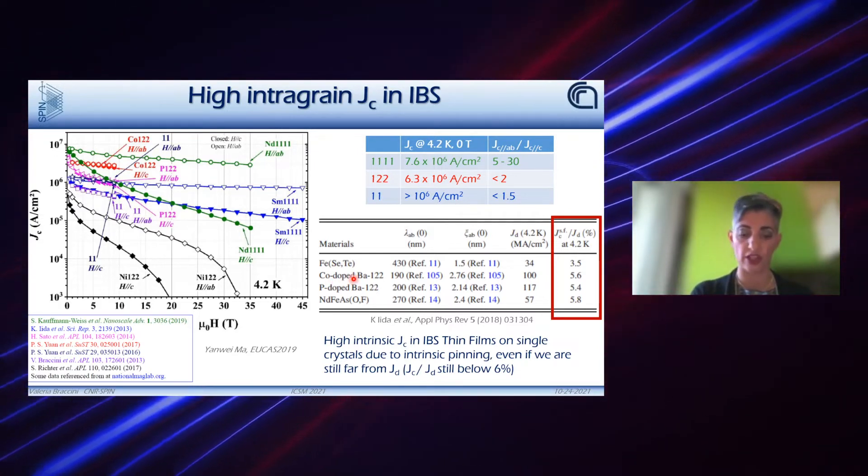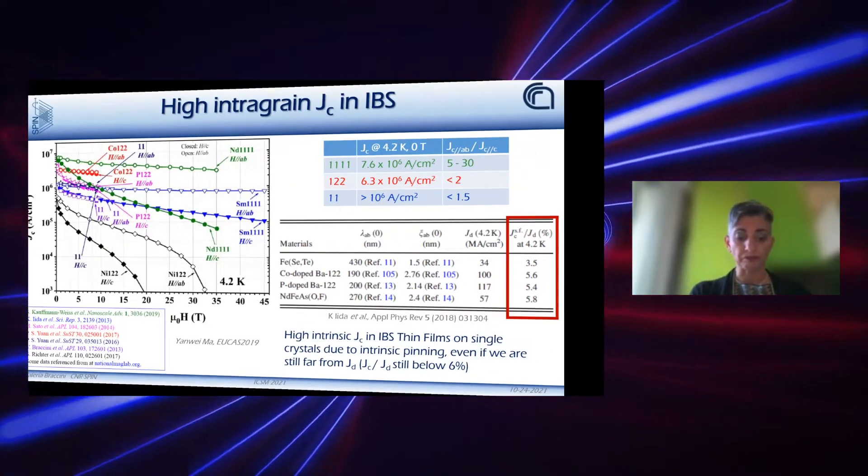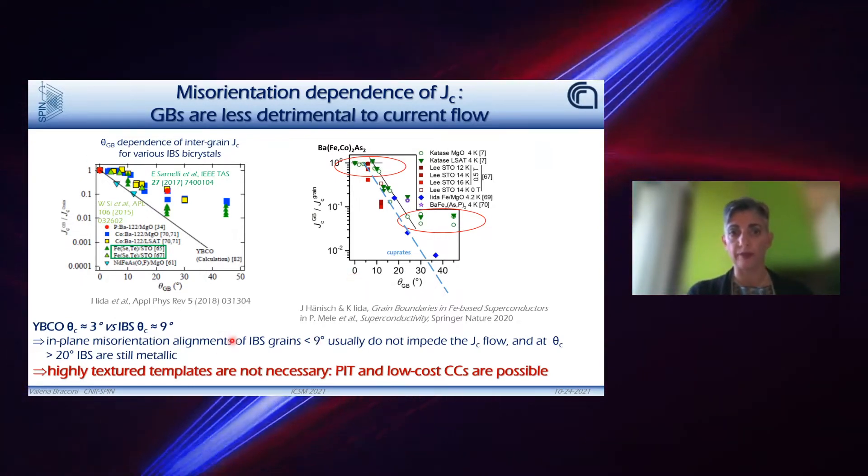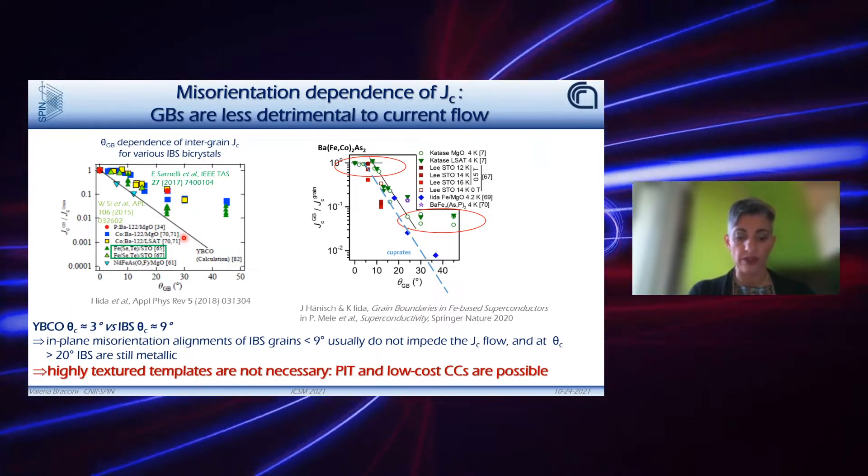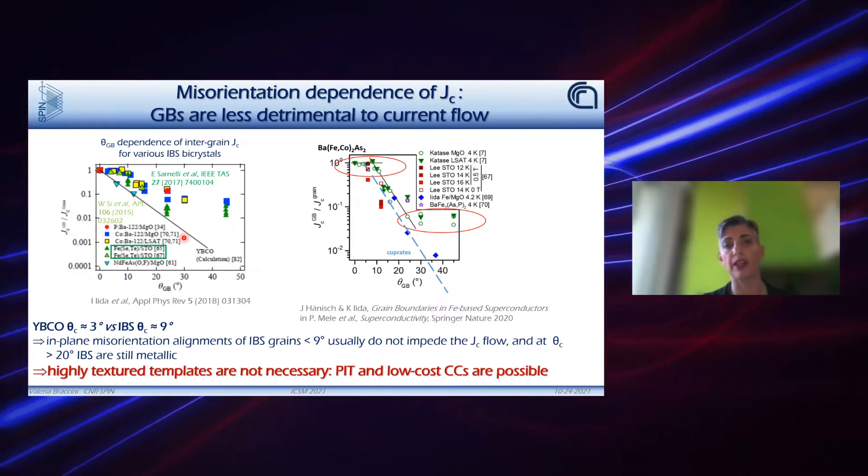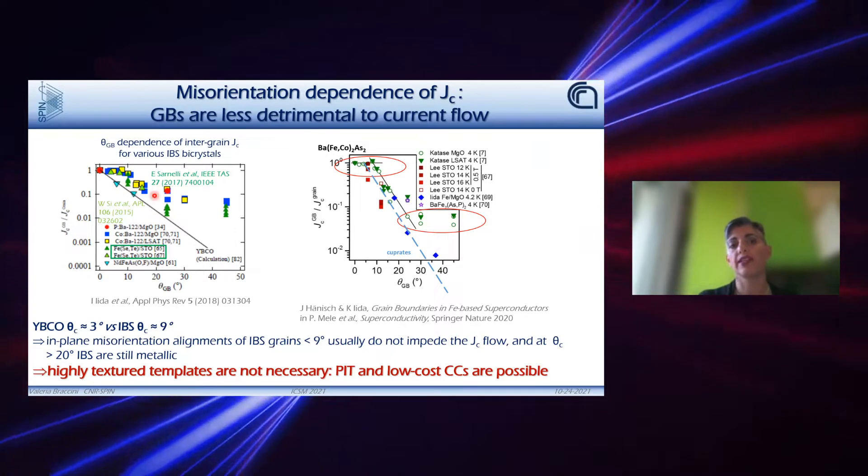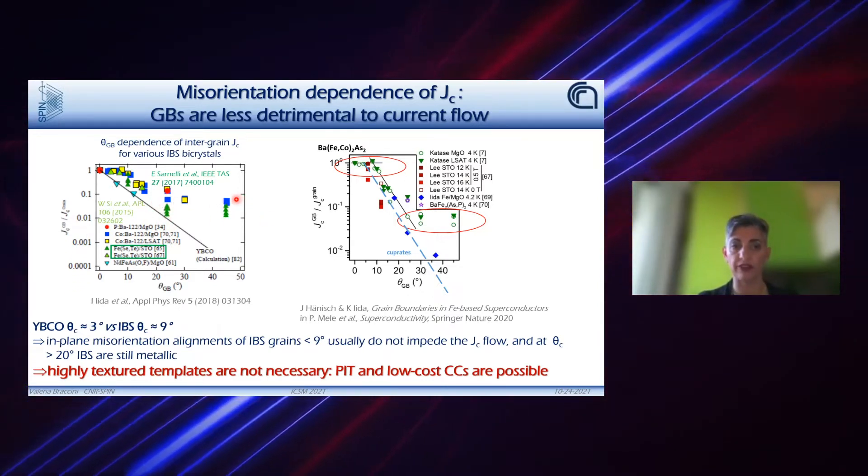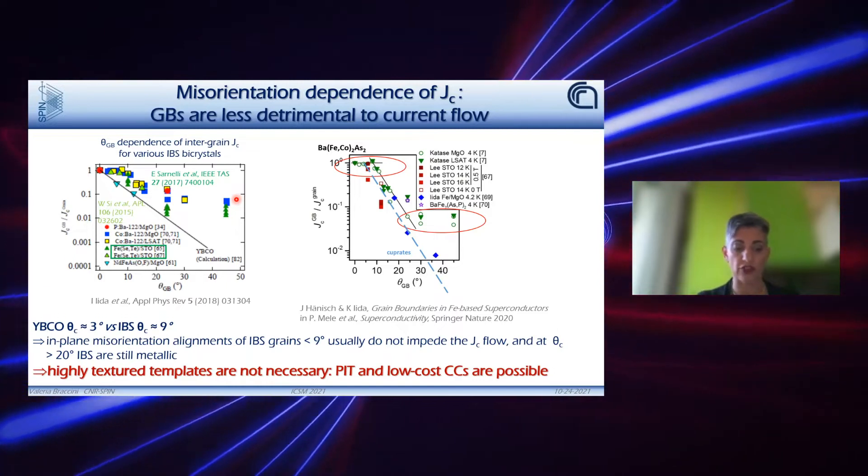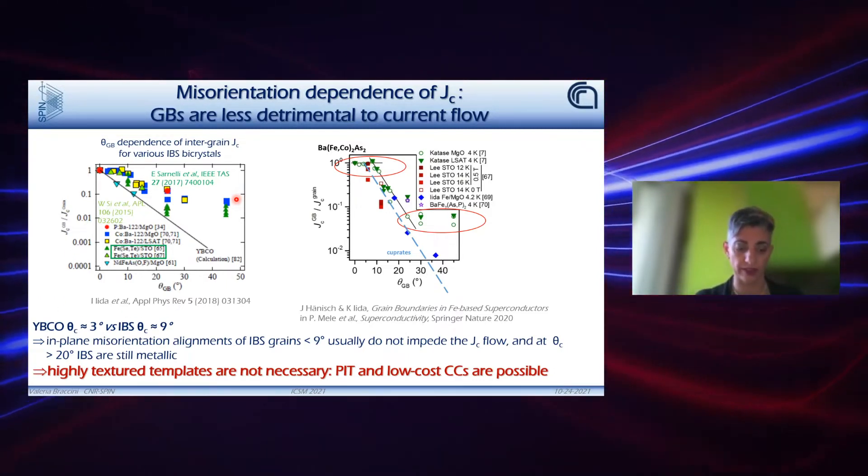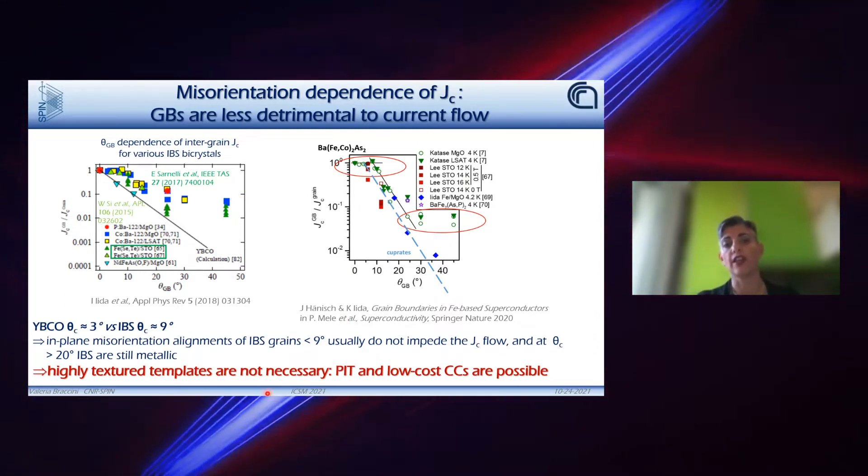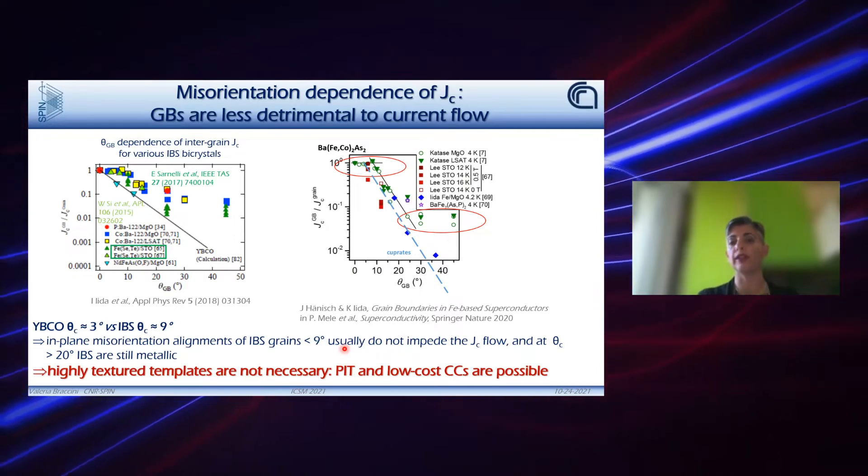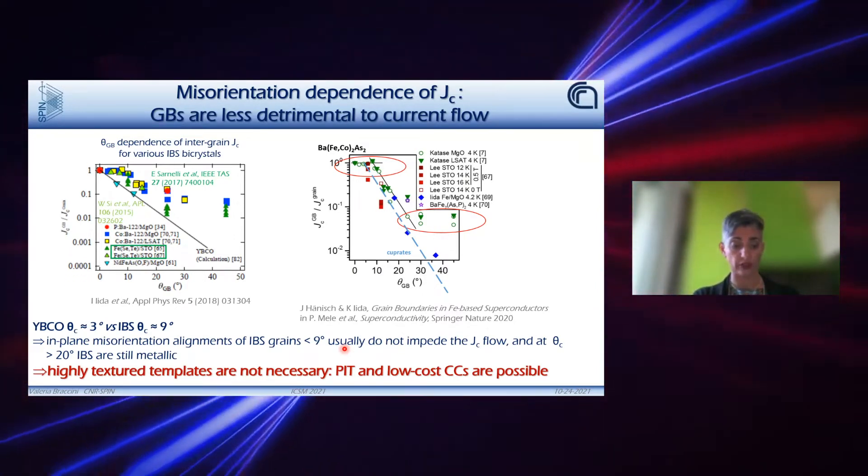We know that IBS has high critical fields, high critical current density, and very flat up to high fields. Intragrain JC is high, and we have a very good intrinsic pinning in this phase. Still, there is improvement that we can achieve also with artificial pinning. We know already that misorientation dependence of JC is quite positive, because in plane misorientation alignment of grains below 9 degrees is not an obstacle for the current flow. And above 20 degrees, still we have metallic behavior. Therefore, the situation is much more positive than compared with REBCO, for example, and highly textured templates are not needed as it is needed for REBCO materials. And therefore, powder-in-tube and low-cost coated conductors are actually possible.